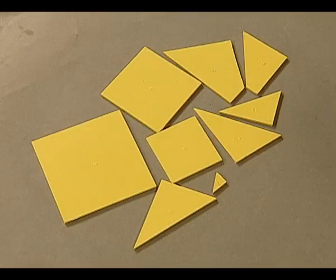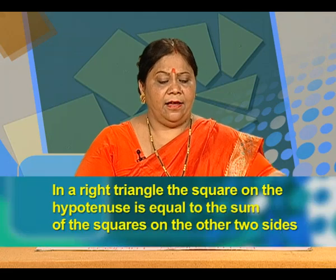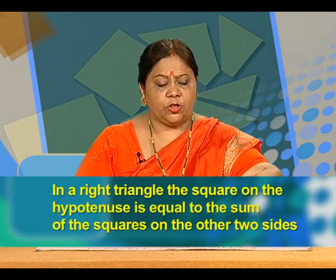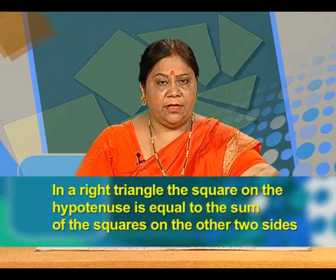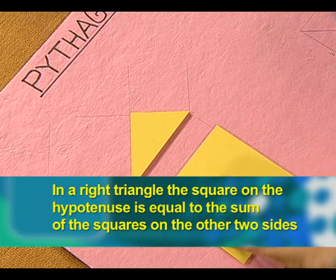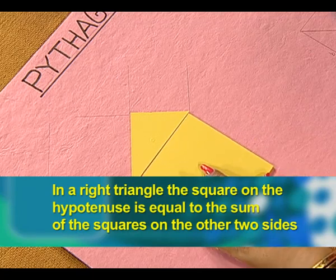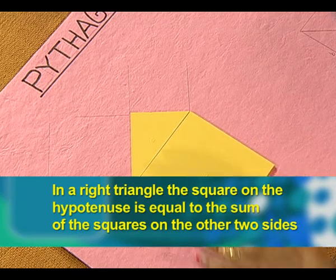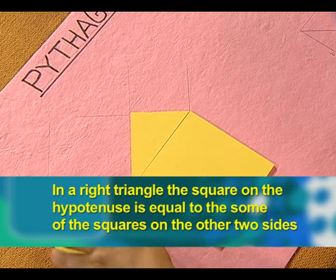We have some colorful cutouts here. Let us verify the Pythagoras theorem, which states that in a right triangle, the square on the hypotenuse is equal to the sum of the squares on the other two sides.